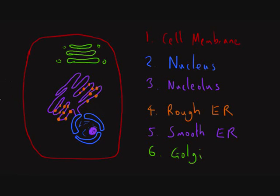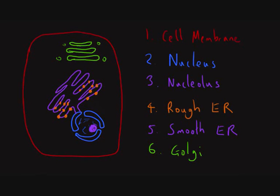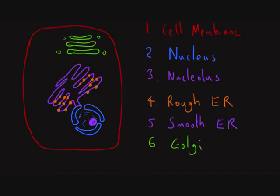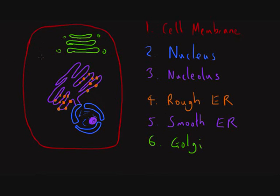There's one final organelle that we'll talk about very briefly here. And that's the mitochondria. You'll have heard of it before. And I'll just draw it over here. And again, this is made up of, unsurprisingly, it's made up of phospholipid bilayer.